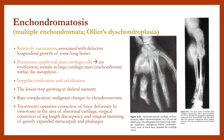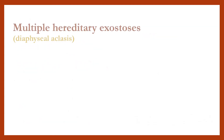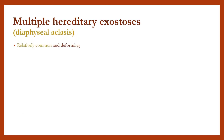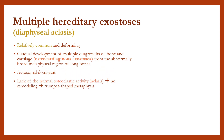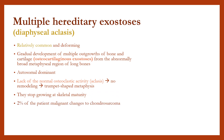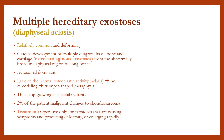Multiple hereditary exostoses are relatively common and deforming. There is gradual development of multiple outgrowths of bone and cartilage from the normally broad metaphyseal region of the long bones. It is autosomal dominant, with lack of normal osteoclastic activity, no remodeling, and trumpet-shaped metaphysis. They stop growing at skeletal maturity. 2% of patients develop malignant change to chondrosarcoma. Treatment is operative only for exostoses causing symptoms, producing deformity, or enlarging rapidly.